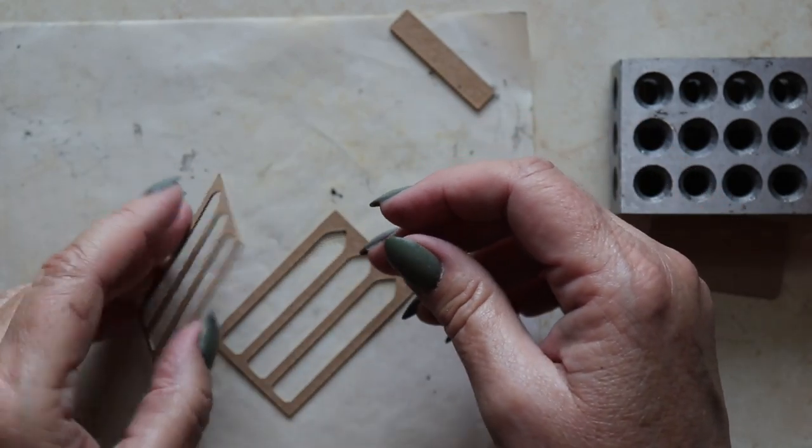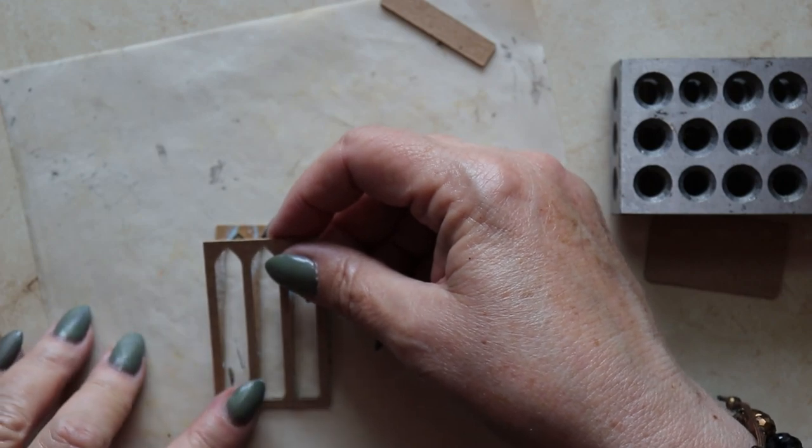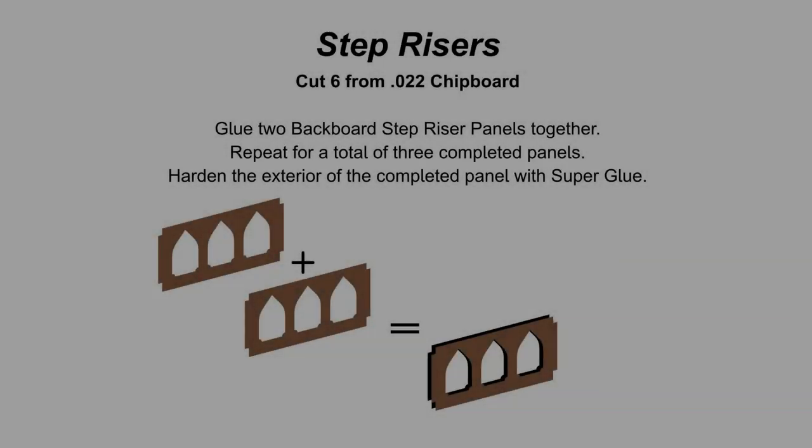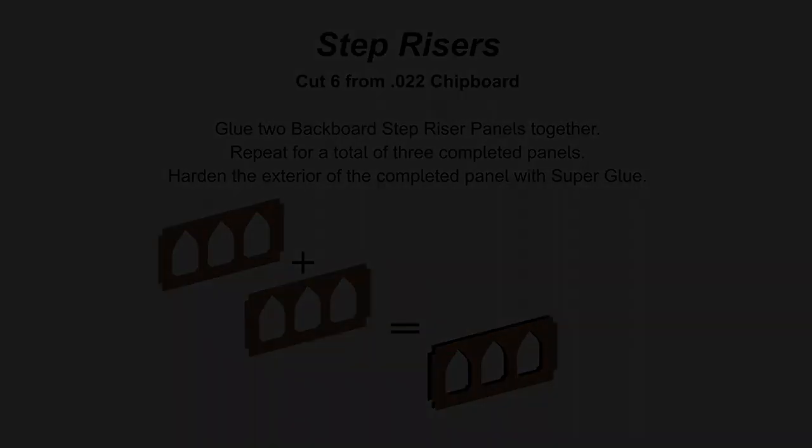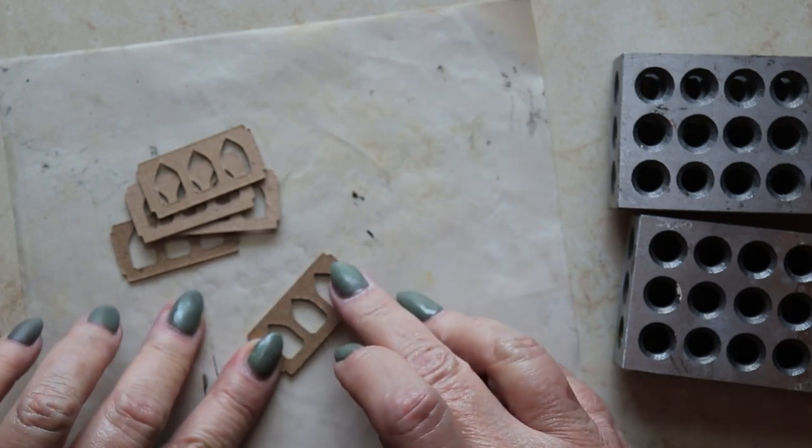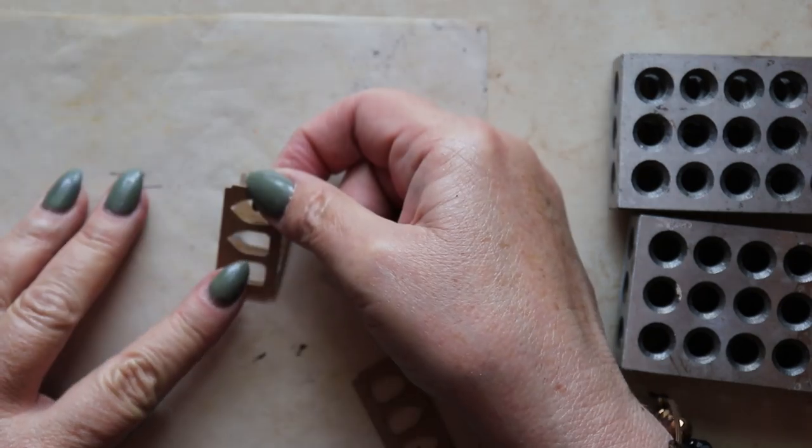The backboard overlay comprises this triple arch design. You'll find two of these panels, and they get glued one on top of the other. The step risers consist of six of these little triple arch panels. Layer them up two at a time so that you have a total of three risers.